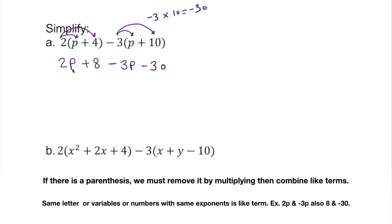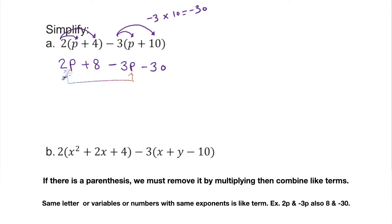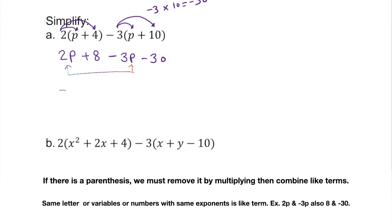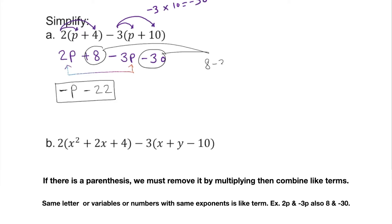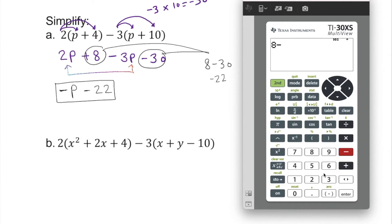We're not done yet — we have to simplify all the way. We have to look for like terms. We see p and p and p — they have something in common. 2p minus 3p gives us negative p, or negative 1p, which is the same thing. Also, number with number: 8 minus 30 gives us negative 22.